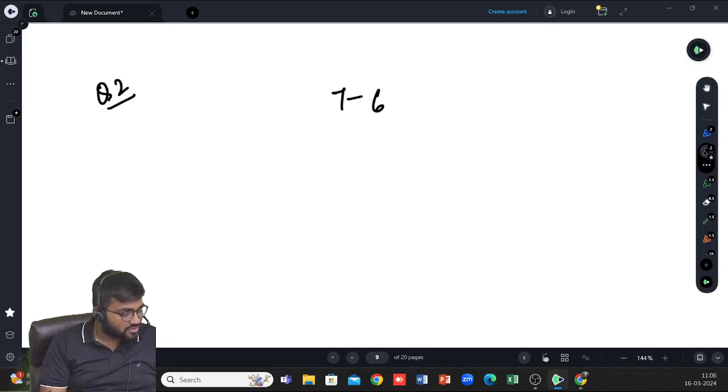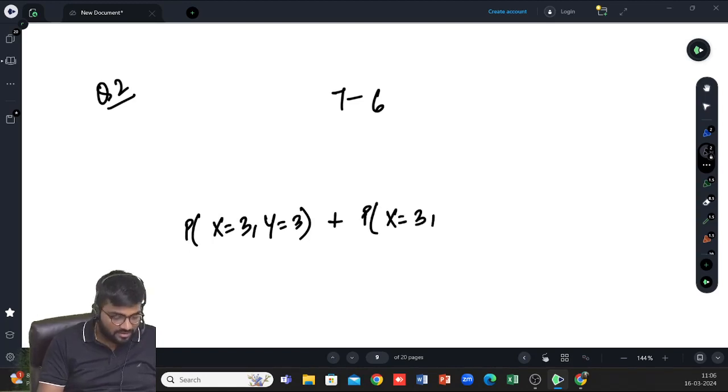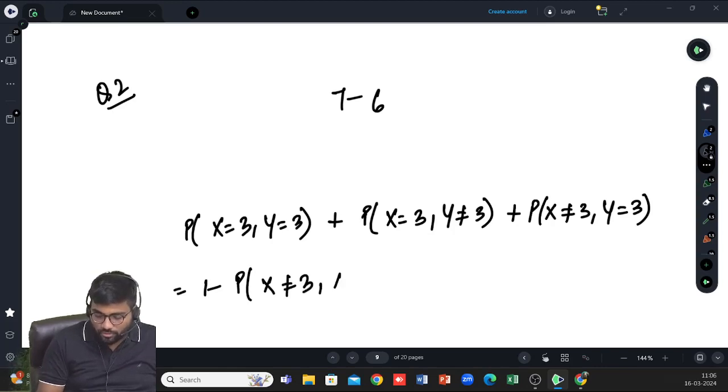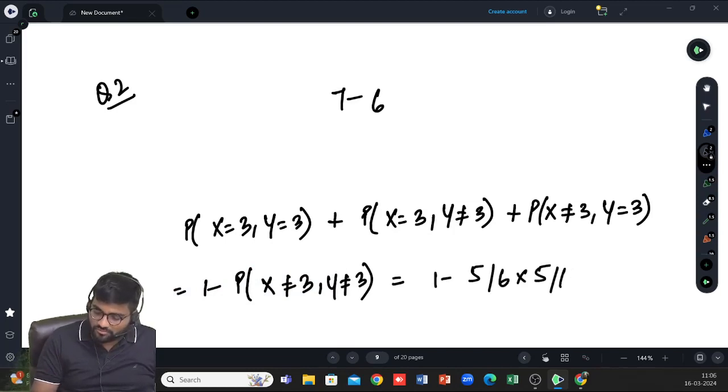At least one dice shows 3. Probability either first shows 3 or second shows 3. This is 1 minus probability that neither shows 3, which is 1 minus 5 by 6 into 5 by 6.